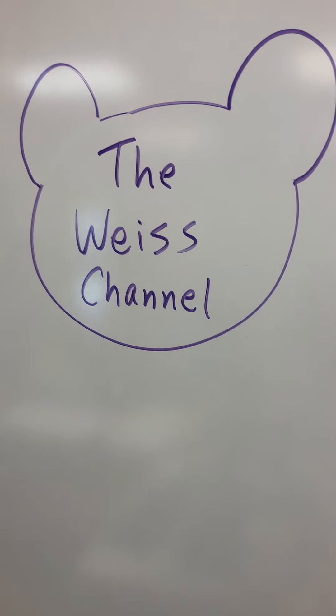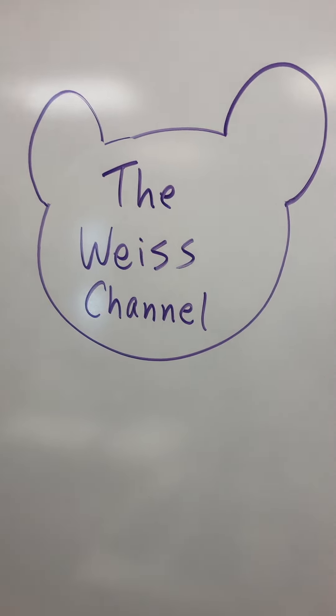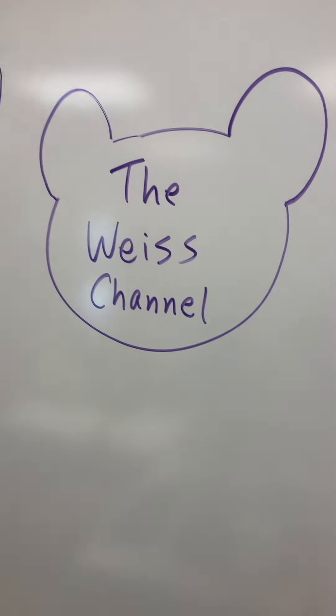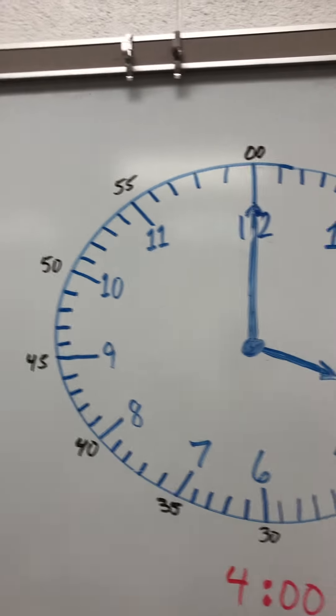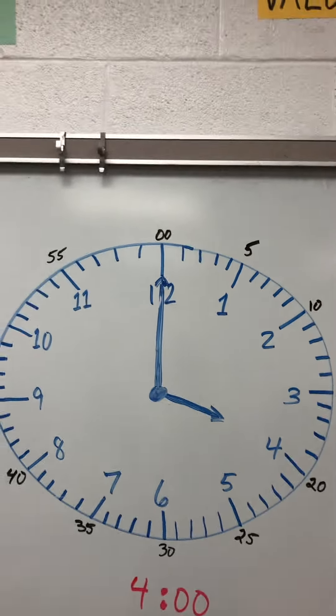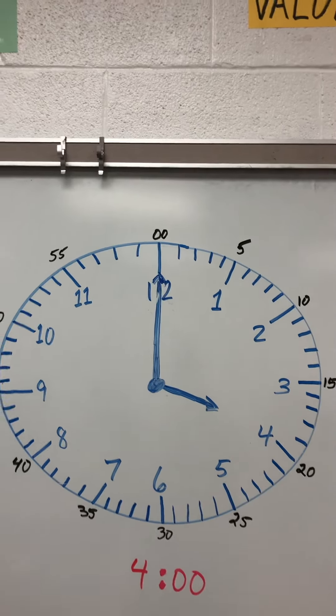Today, we're talking about telling time on an analog clock. An analog clock is one that has hands on it. A digital clock has just numbers.